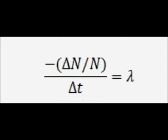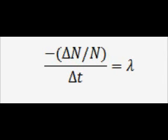To derive this, I need to start with the original definition of lambda. Lambda is equal to the change in the number of nuclei over the number of nuclei we started with, divided by time. The negative indicates a decrease. So if three nuclei decayed in a sample of 100,000, the change in nuclei is minus three over 100,000. The two negatives cancel, giving 3 in 100,000, with delta t being one second — that's where the definition of lambda comes from.